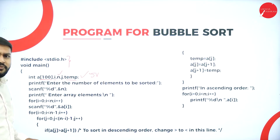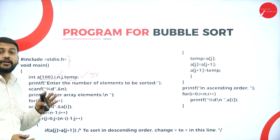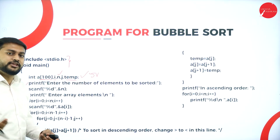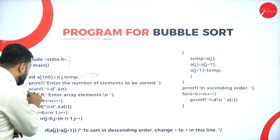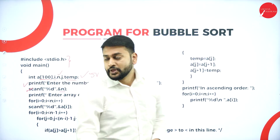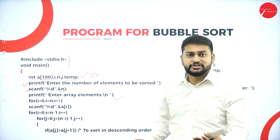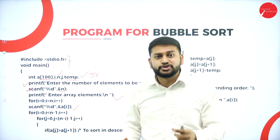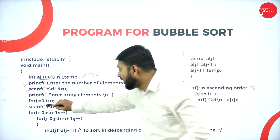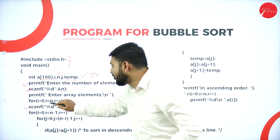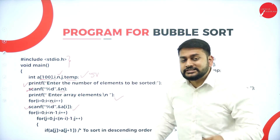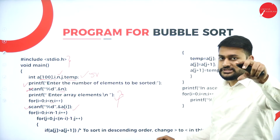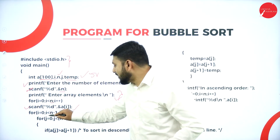If you learn one sorting program, all other programs need only slight modifications. First, the program asks the user how many numbers to store in the array, stored in variable n. Then it asks the user to enter the elements, storing them in array A using a for loop that executes n times.